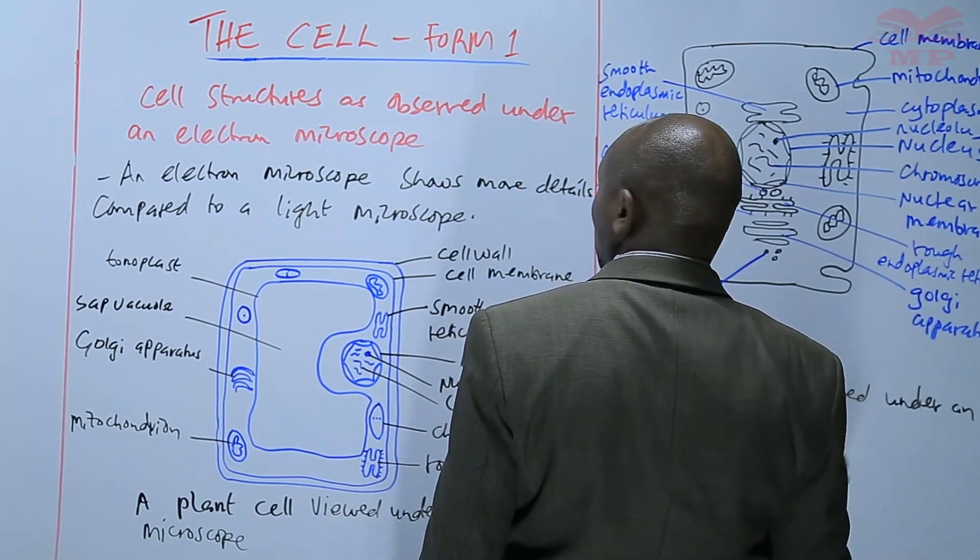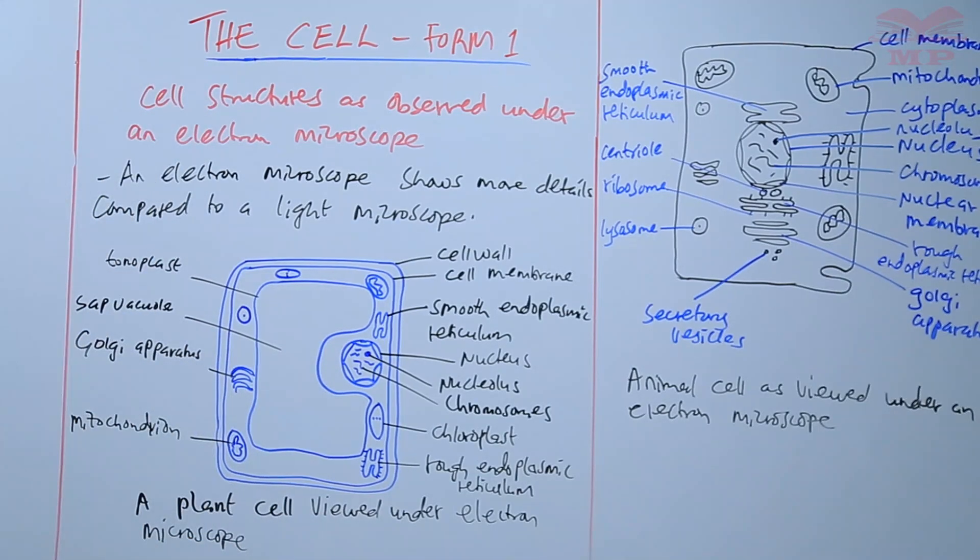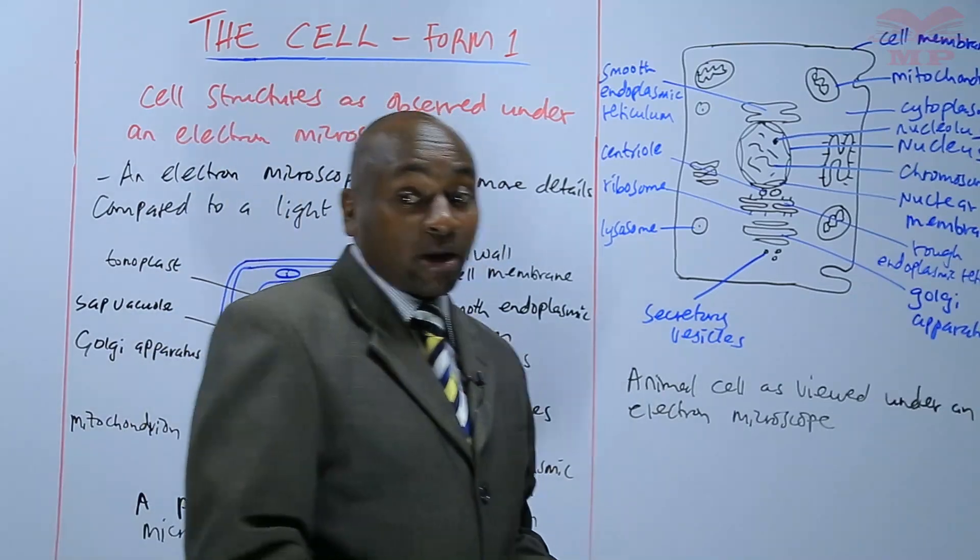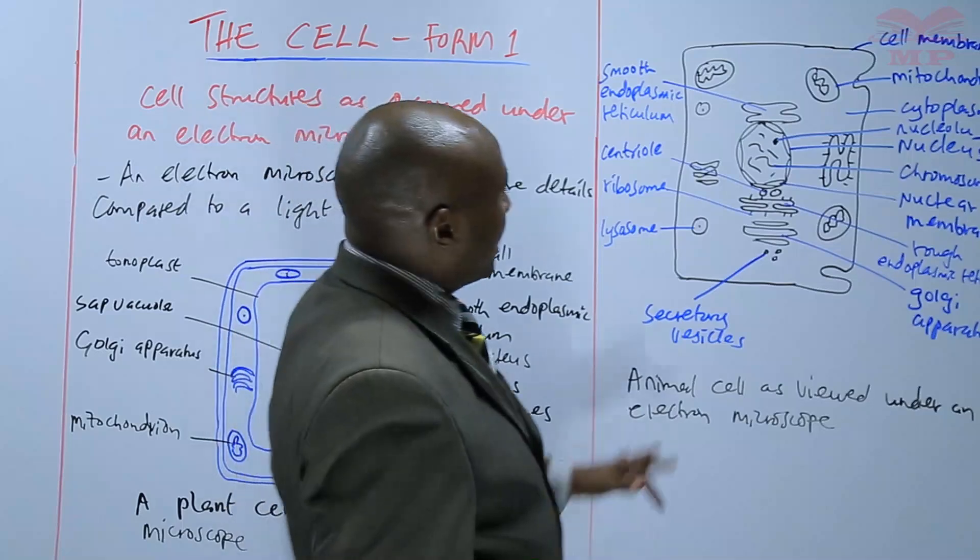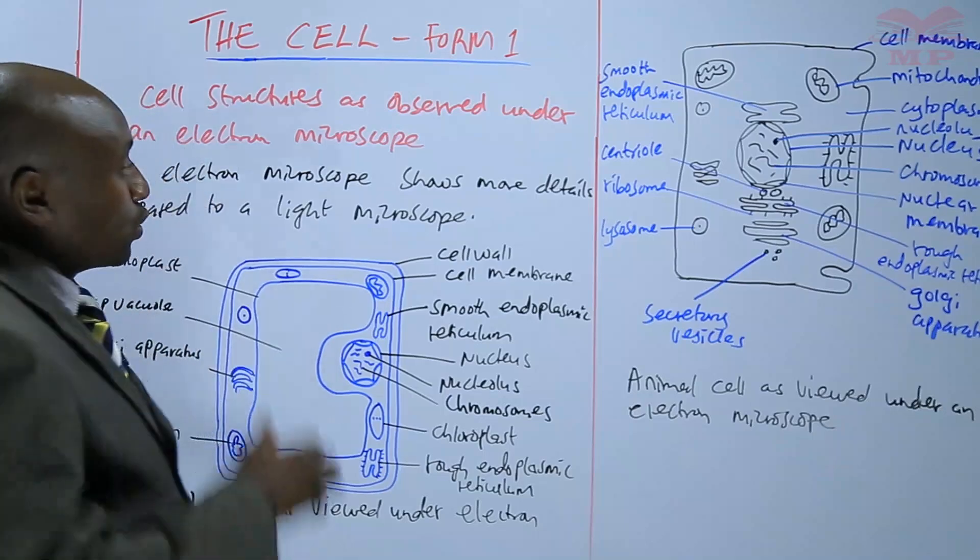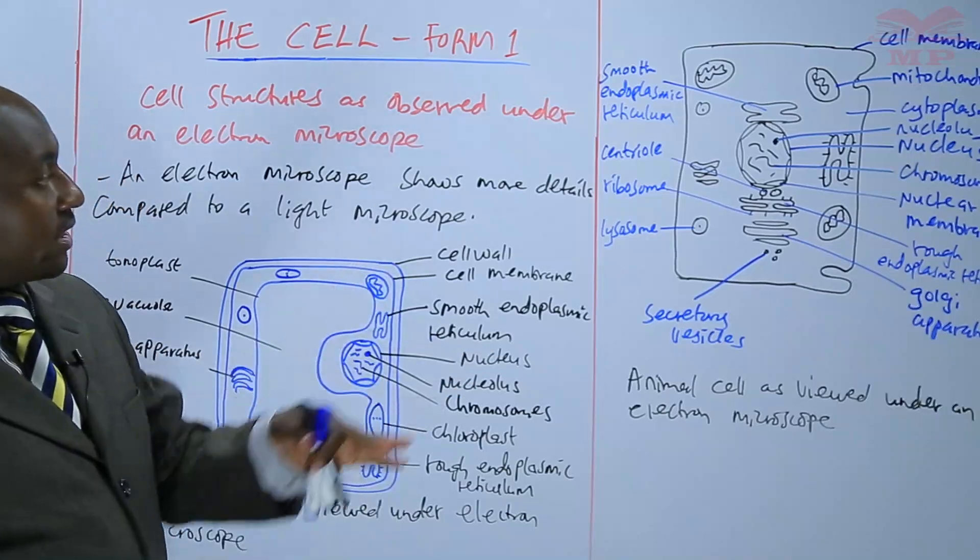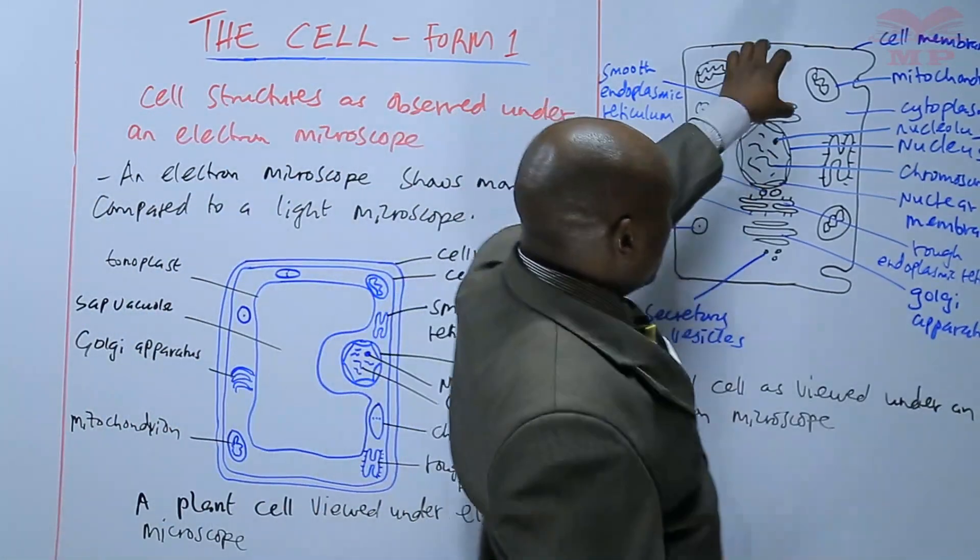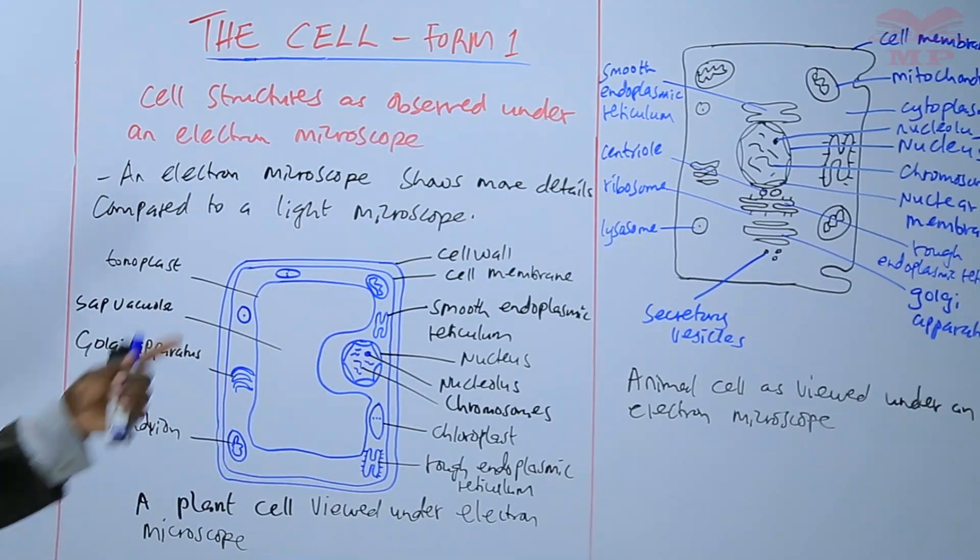So it shows more details. Both diagrams show more details of a plant cell and animal cell viewed under an electron microscope. We have not labeled all the structures because there are many, and during labeling our arrows should not cross each other. We should avoid shading the diagram as much as possible.